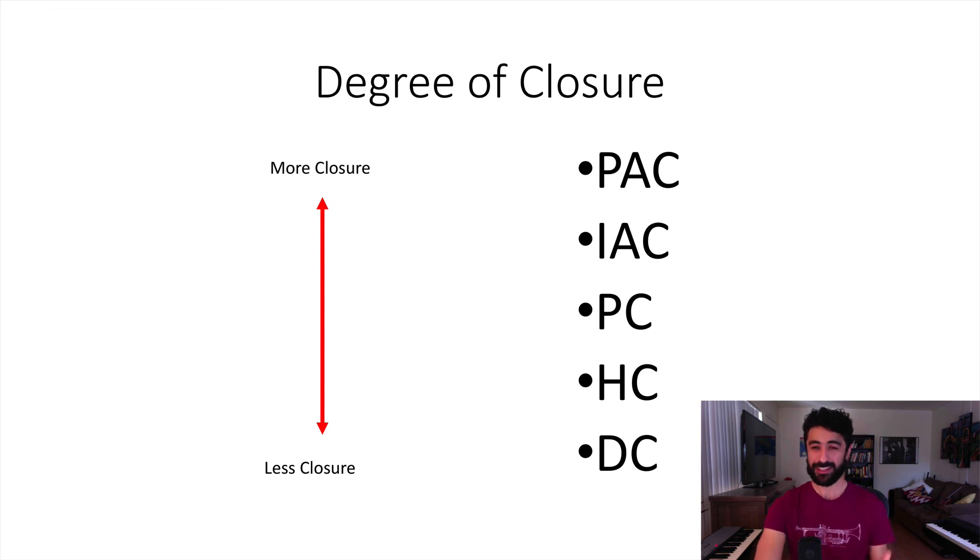If we were to put all these different kinds of cadences and organize them from less closure to most closure, we have something like this: The perfect authentic cadence creates the most amount of closure, then goes the imperfect authentic cadence, then the plagal cadence, then the half cadence which is very open, and then the deceptive cadence would be the one with the least amount of closure.